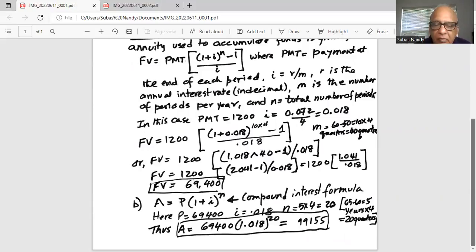Here P is the money at the beginning of 60th year which is $69,400. I, same interest, 0.072 compounded quarterly which is 0.072 divided by 4 is 0.018, and we are interested in the money when she is 65. So 65 minus 60 is 5 years multiplied by 4 quarters is 20 quarters.